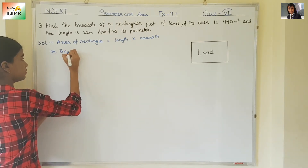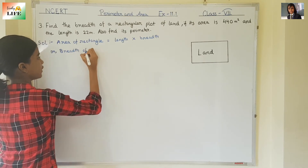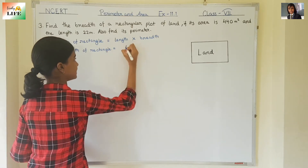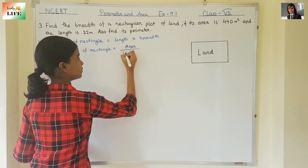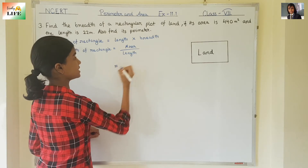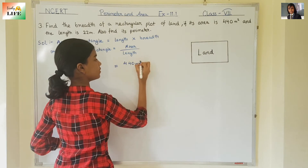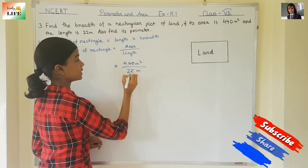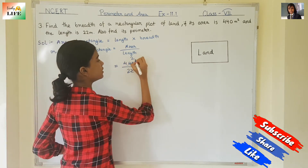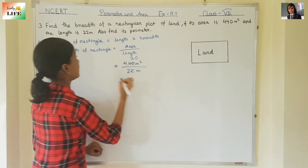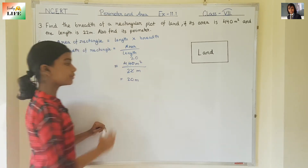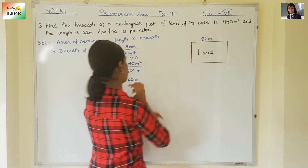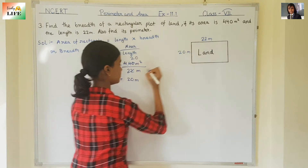So, breadth of the rectangle will be area divided by length. What is the area? It is 440 meter square, divided by the length which is 22 meter. So, 22 times 2 is 44, and then 0 — so breadth is 20. And breadth is not meter square, it will be meter. So the breadth is 20 meter. The length was already given as 22 meter, and the breadth we found is 20 meter.